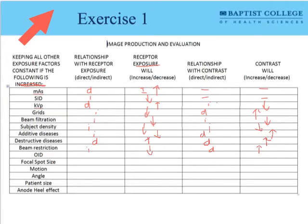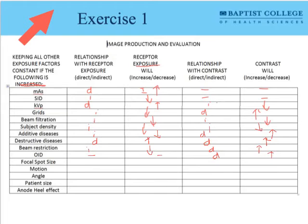OID is best considered a geometrical factor — it's the distance from the object being imaged to the image receptor. As I increase that distance, I would expect to see no real change in receptor exposure per se, because it's a geometrical factor. But because of the air gap effect, we could see a relationship between OID and contrast. So OID has a direct relationship with contrast: as OID increases, contrast can potentially increase due to reducing the amount of Compton scattering photons reaching the image receptor. This technique is used in a lateral C-spine, for example, to reduce scatter and fog from the patient's shoulder tissue to better image the space between C7 and T1.